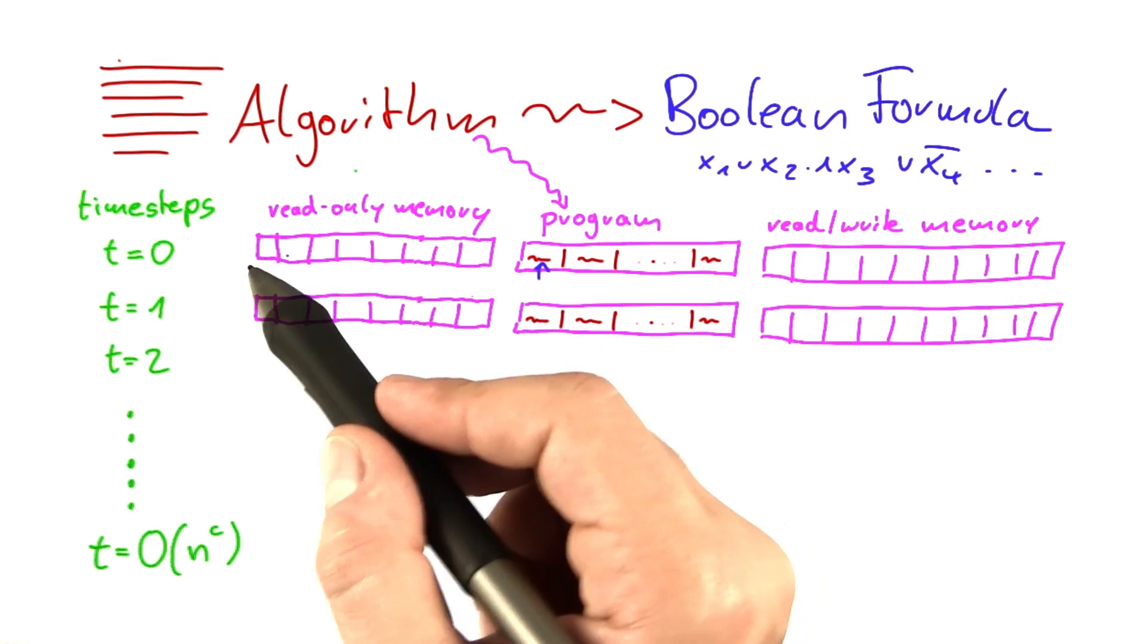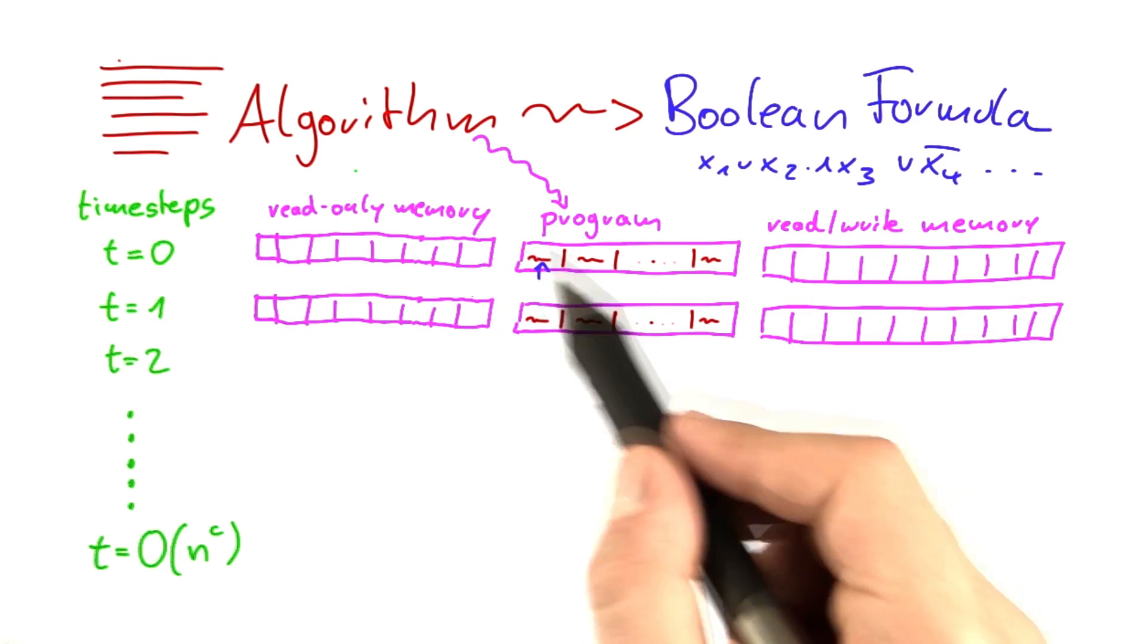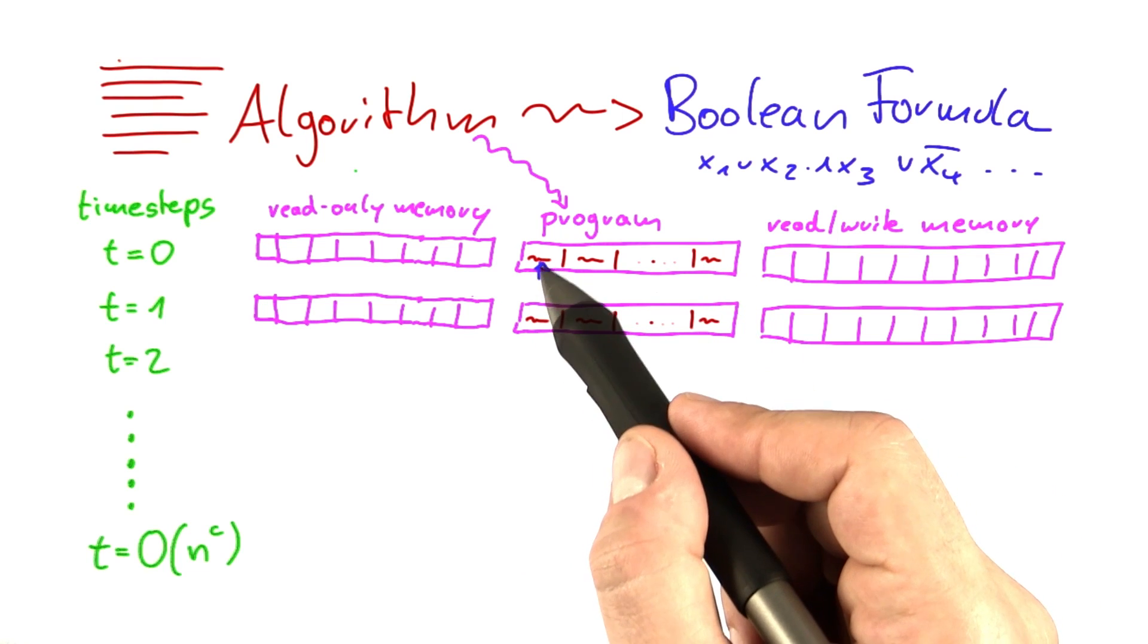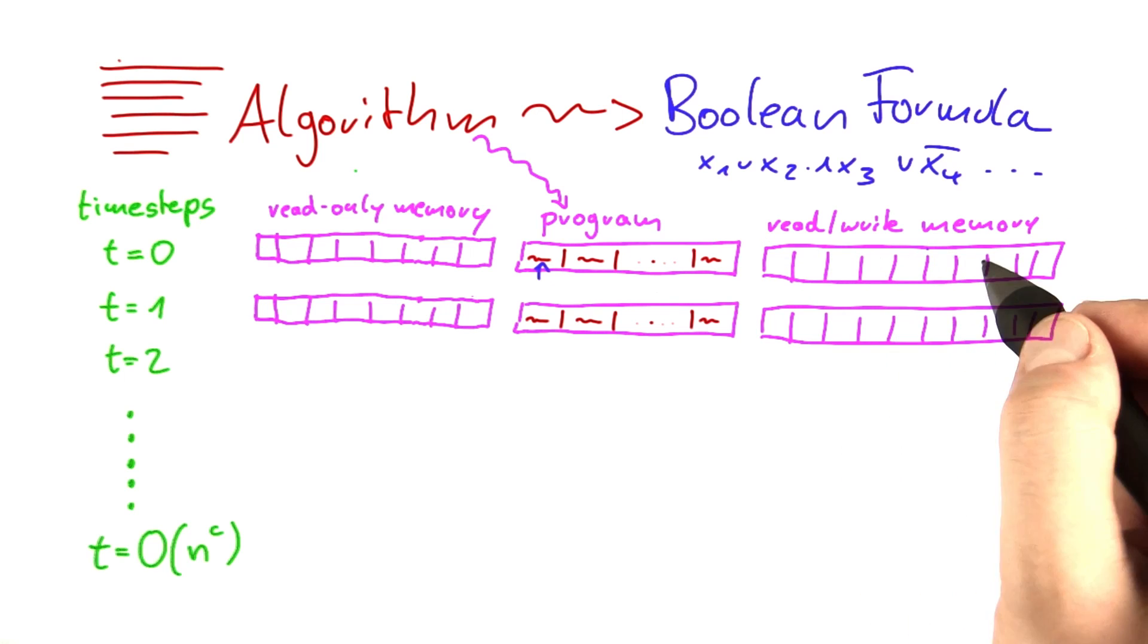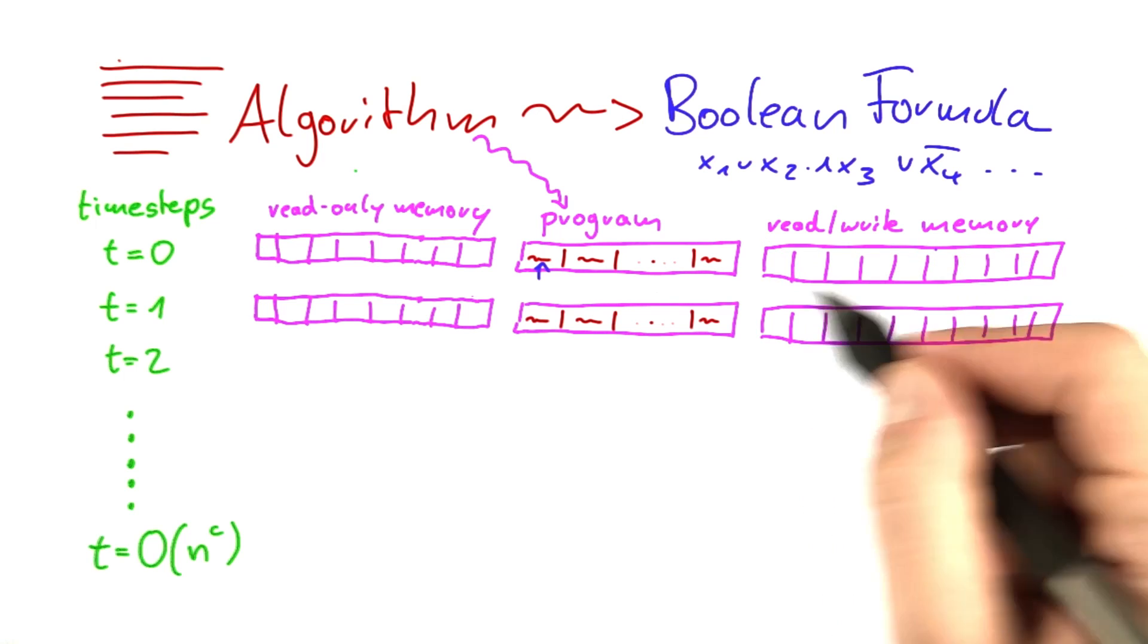But you can basically say this is the input here. This is the program. And this is the line of the program that we're executing right now. And this here are the contents of the read-write memory. So in the beginning, this will be empty.